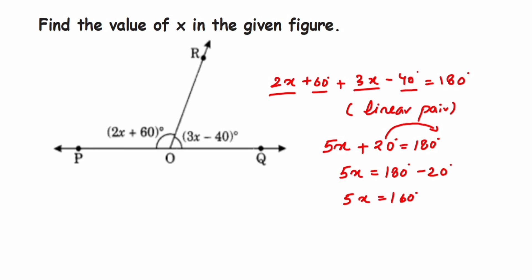So x will be equal to 160 degrees upon 5. So cancel them. So 5 ones are 5, 3s are 15, 1 is left that makes the number 10, so 5 twos are 10.